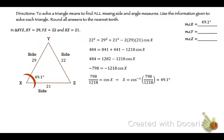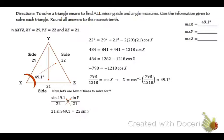Now we have an angle. I don't really want to use law of cosines again. Let's use the law of sines to solve for Y. So that's going to be sin 49.1 over 22 equals sin Y over 21. Cross multiply. 21 sin 49.1 equals 22 sin Y. Divide by 22.